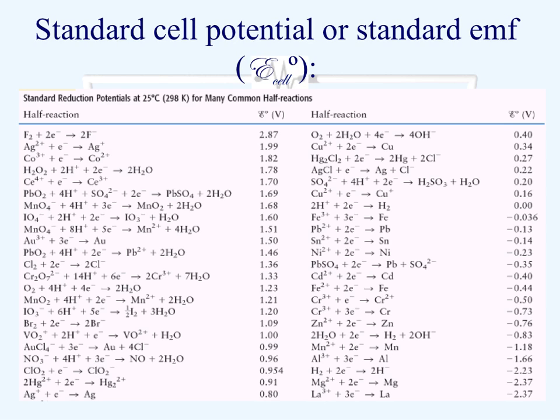The standard cell potentials or the standard EMF of half-reactions are usually provided in a table as you see here. We have various half-reactions in tabulated form with the cell potentials in volts for each. What I want you to notice is that these are all half-reactions that are reduction processes — electrons are being picked up on the reactant side of each of these.